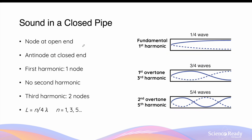Standing sound waves can also be formed in a closed pipe system, where one end is closed and the other is open. The frequencies that allow standing wave formation in a closed pipe are different from those of an open pipe. For the fundamental frequency or first harmonic, the node occurs at the closed end and the antinode occurs at the open end, with the pipe length equal to exactly a quarter of the wavelength. The second frequency that forms a standing wave in a closed pipe is not the second harmonic — it is the third harmonic, also known as the first overtone.